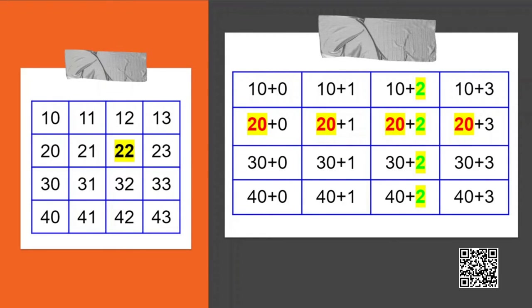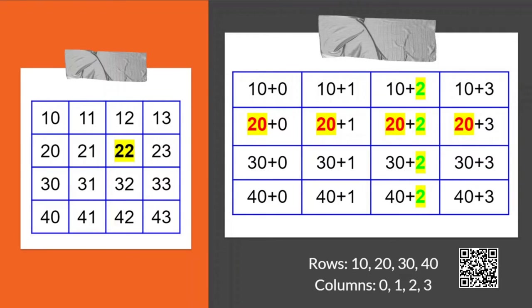Once no more numbers can be chosen, it means that we have chosen 10, 20, 30 and 40 — one from each row — and 0, 1, 2 and 3 — one from each column. So no matter which numbers you pick, the sum will always be the same.